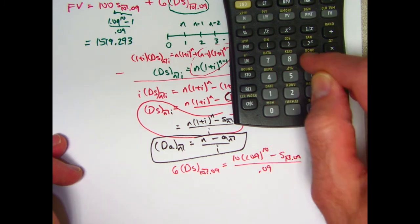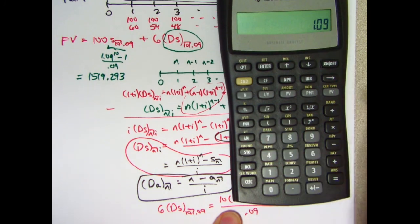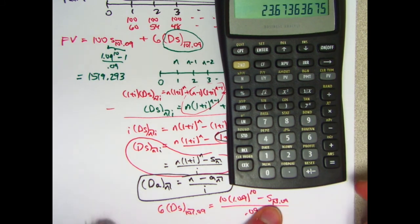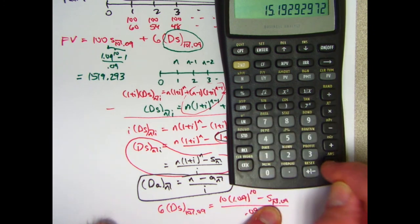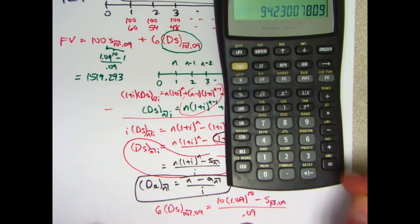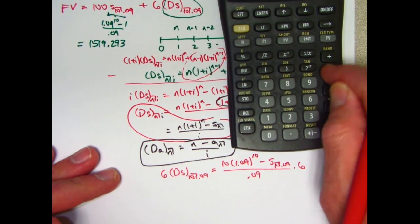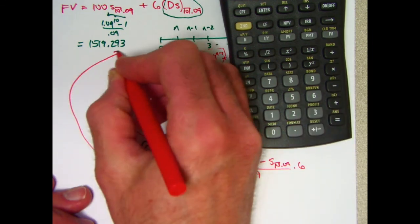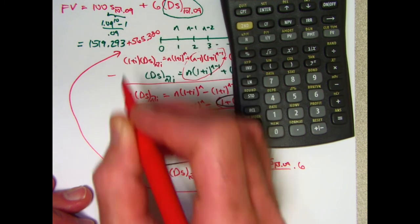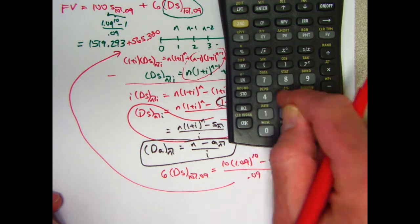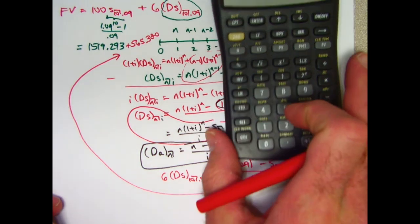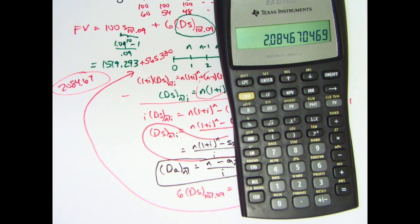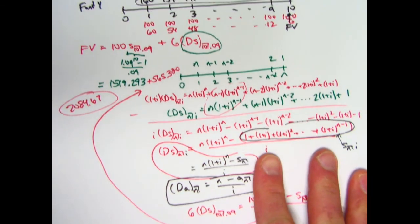Using the calculator: 1.09 to the 10th, times 10, subtract register 0, divide by 0.09, then multiply by 6. We get 565.38. Adding that to the level annuity component of 1,519.29 gives a final answer of 2,084.67. And that is correct. It's a complicated problem, but the derivations are important.